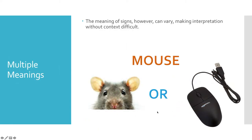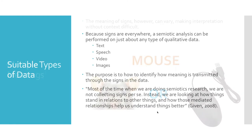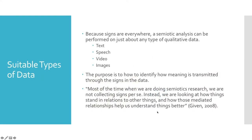When determining the significance of signs and their meanings, however, it is important to consider context. The sign 'mouse' could have very different meanings depending on the context in which it is used. Because signs are everywhere, a semiotic analysis can be performed on just about any type of qualitative data, such as written text, speech, videos, or images.